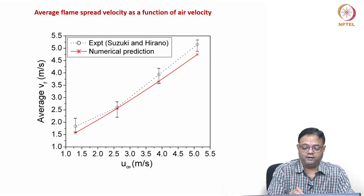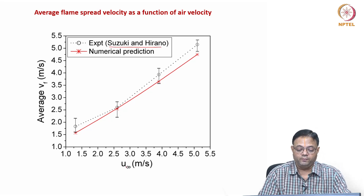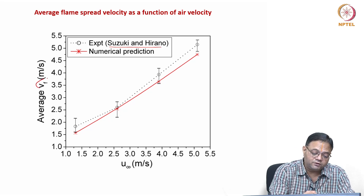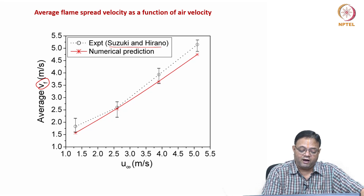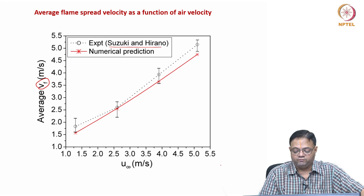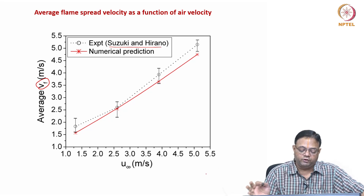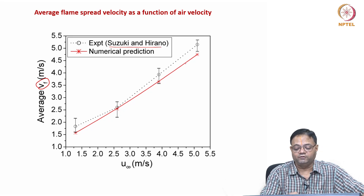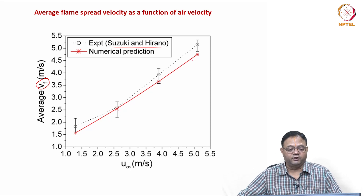For validation, Japanese researchers Suzuki and Hirano performed experiments for several free stream velocities, measuring average flame spread velocity. The average flame spread velocity increases as the free stream velocity increases in concurrent flow — aided by the air velocity, the flame also moves faster. The numerical simulation results (shown in red) match well within the range of the experimental data (dotted line with symbols). This concludes the case studies.